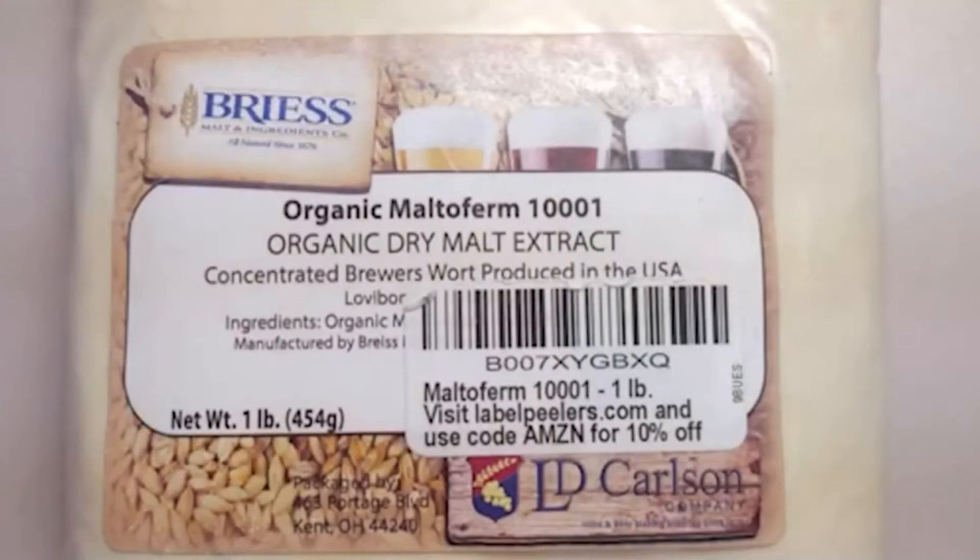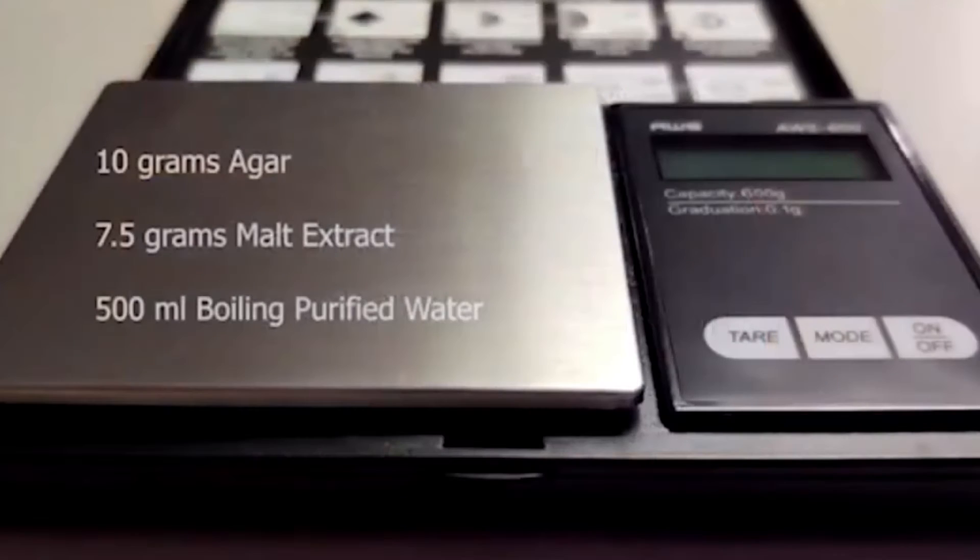We have since come up with a standard MEA recipe that works to promote the onset of rhizomorphic growth while reducing the chance of contamination by using 10 grams agar, 7.5 grams malt extract to 500 milliliters of purified water.